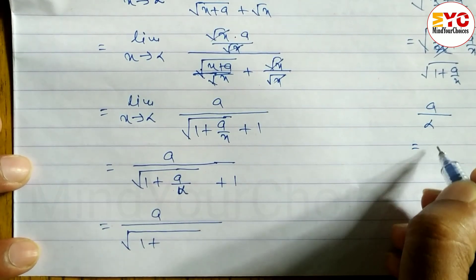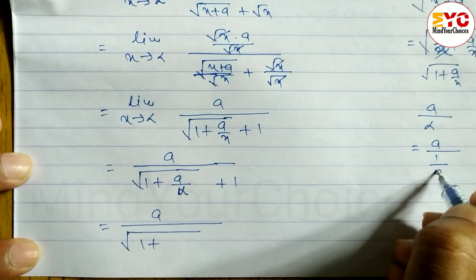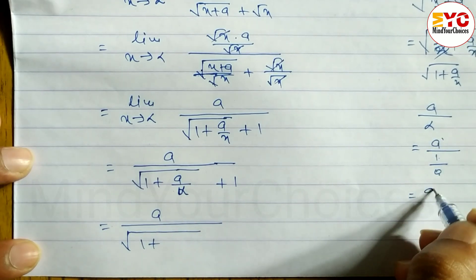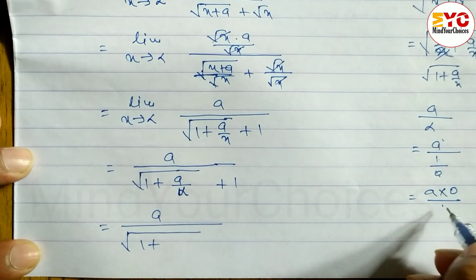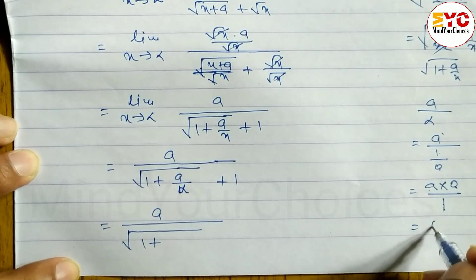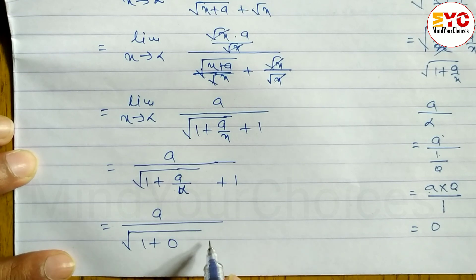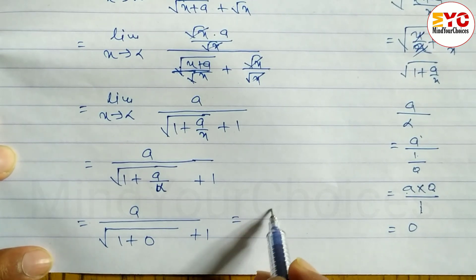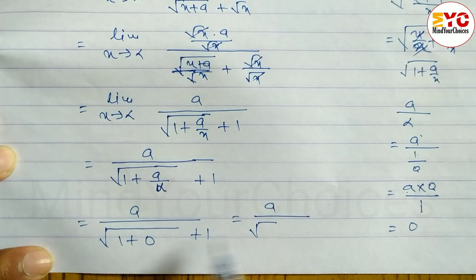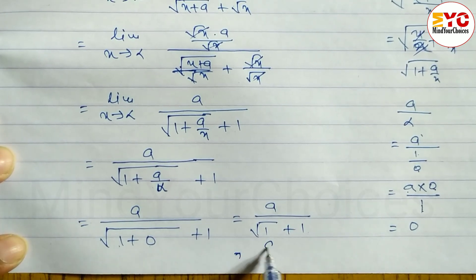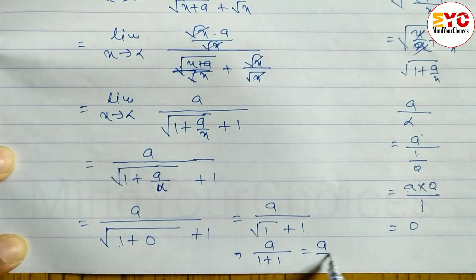Since √1 = 1, this gives a divided by 1 + 1, which equals a/2. So the limit equals a/2, which is equal to the RHS.